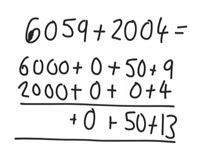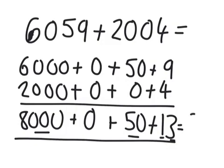And 6,000 and 2,000 is 8,000. So altogether we have 8,000, then 8,050, 8,063. That's 8,063.